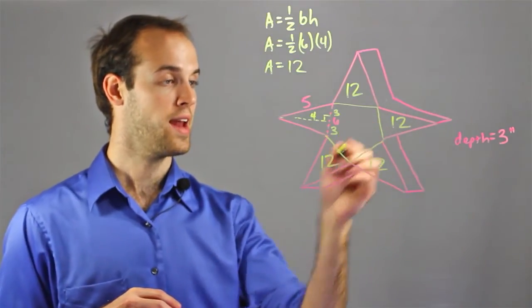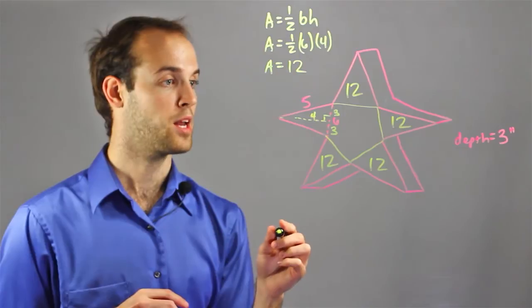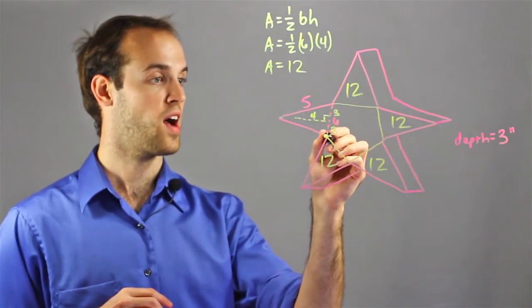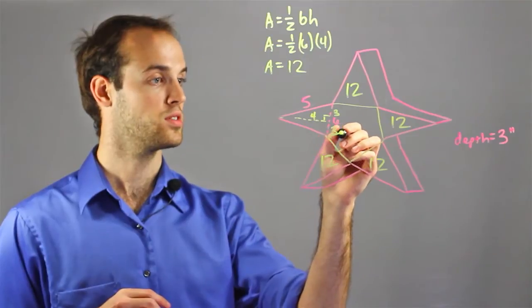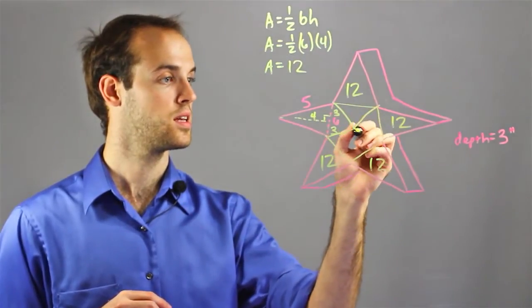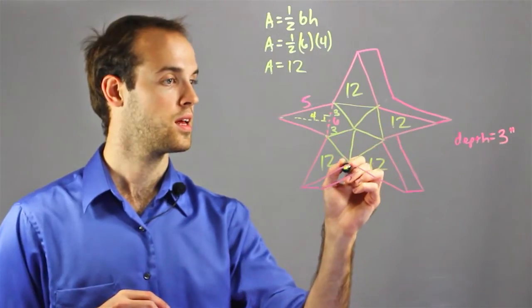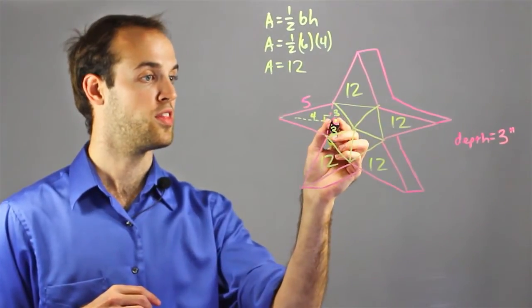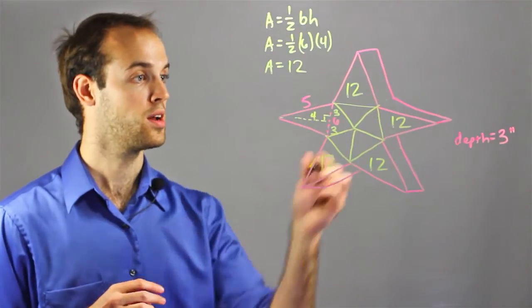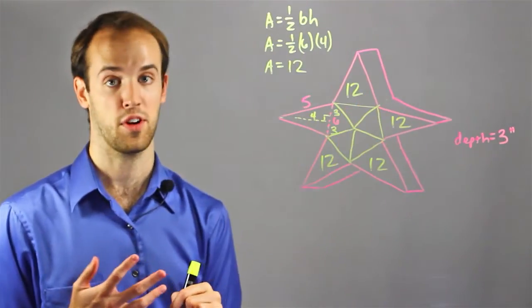So for this pentagon, the best way I'm going to be able to solve it is by dividing this shape into five smaller triangles, which I will do just like this. And now I already know that this base is six, which means that the whole perimeter must be six times five, or 30.